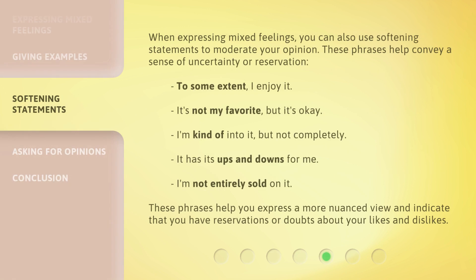When expressing mixed feelings, you can also use softening statements to moderate your opinion. These phrases help convey a sense of uncertainty or reservation. To some extent, I enjoy it. It's not my favorite, but it's okay. I'm kind of into it, but not completely. It has its ups and downs for me. I'm not entirely sold on it. These phrases help you express a more nuanced view and indicate that you have reservations or doubts about your likes and dislikes.